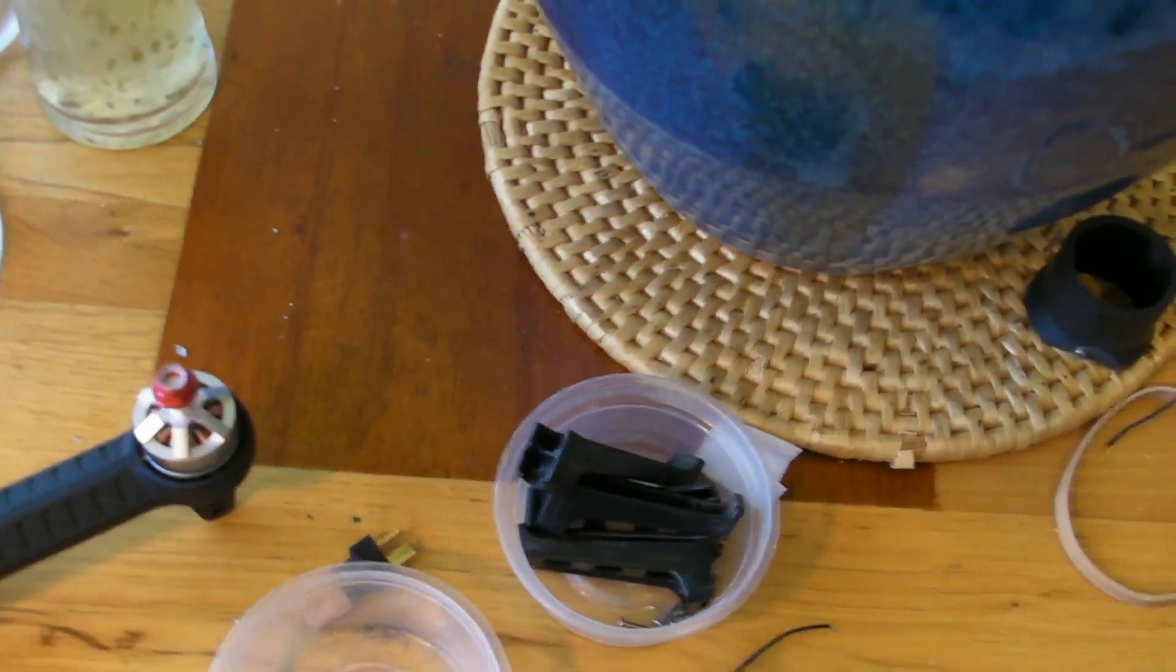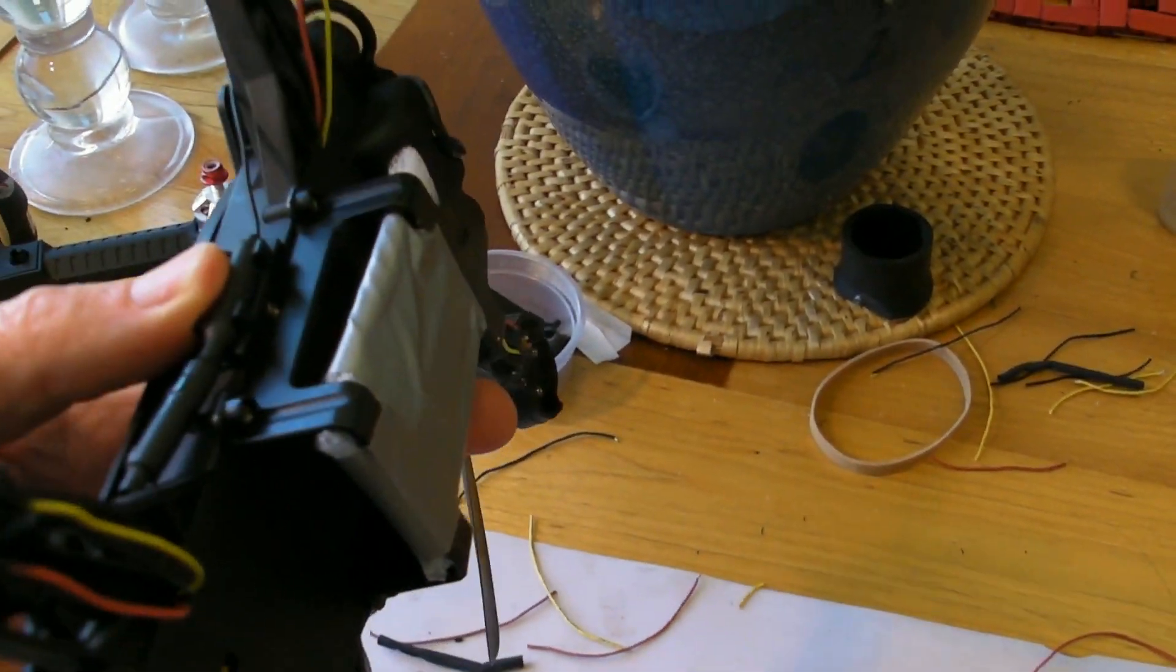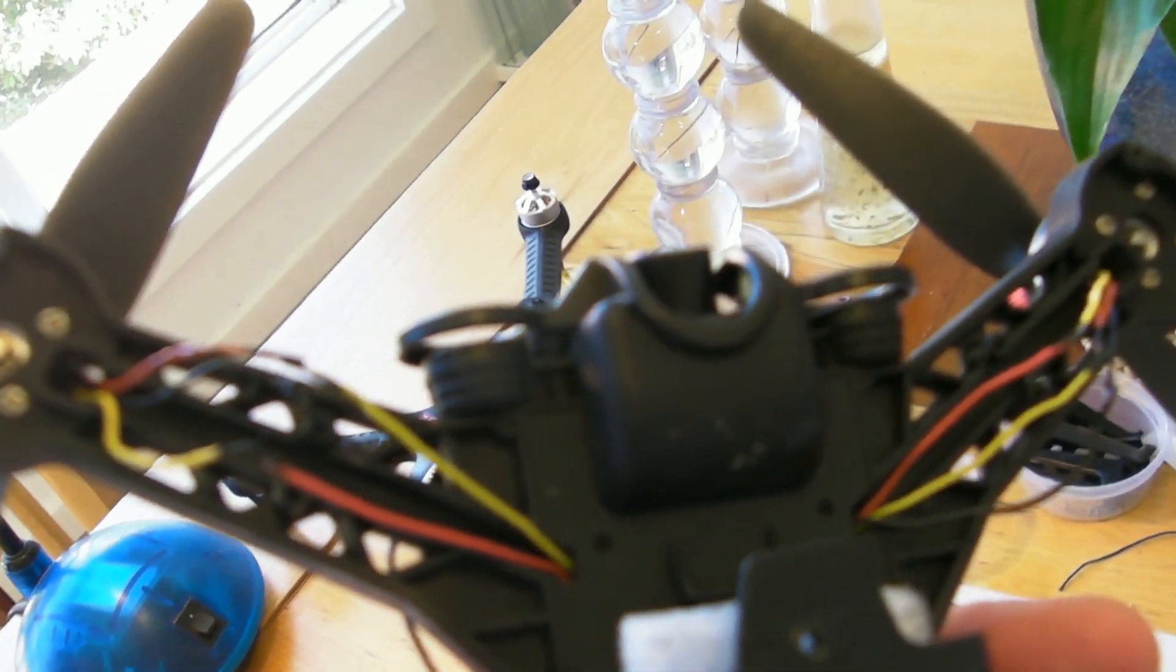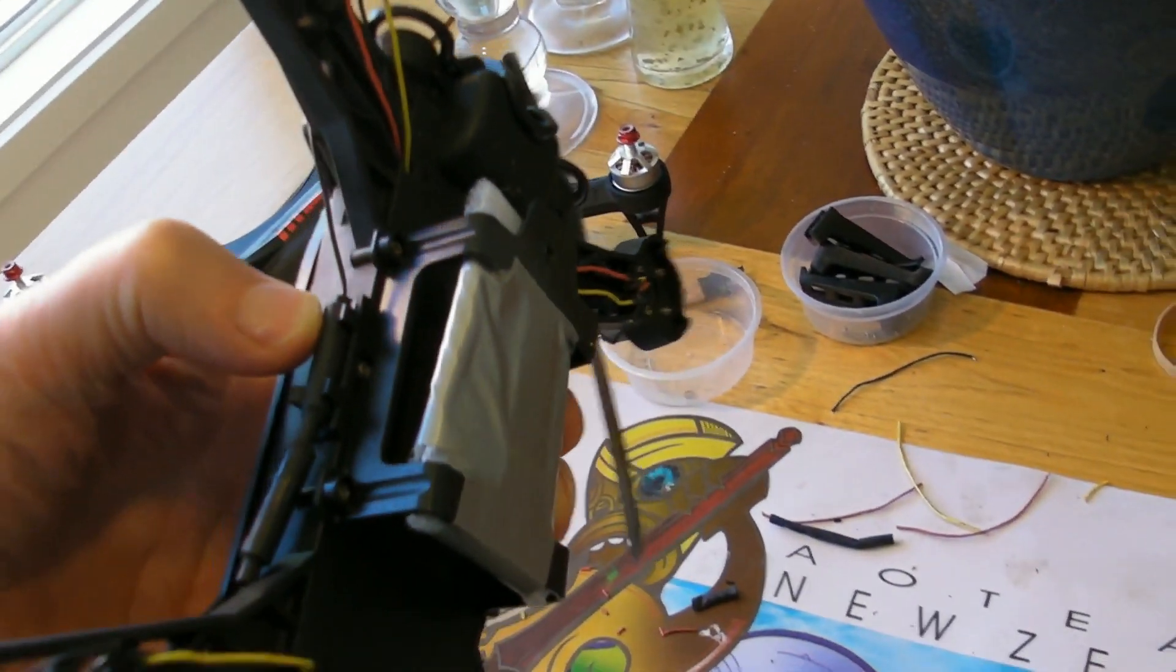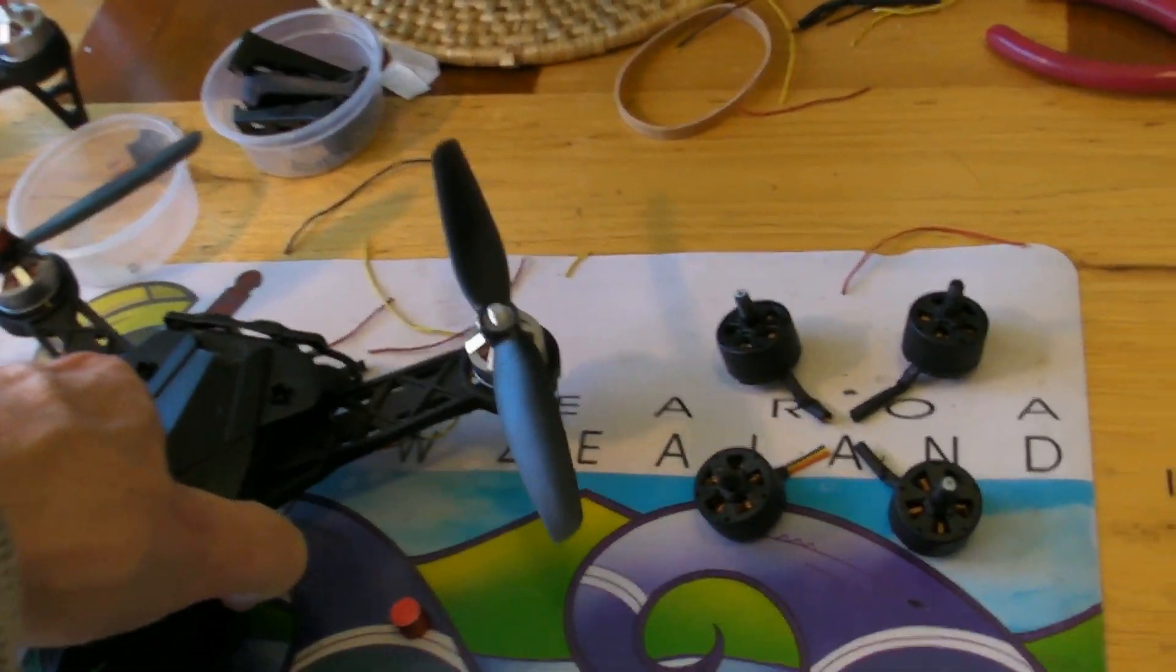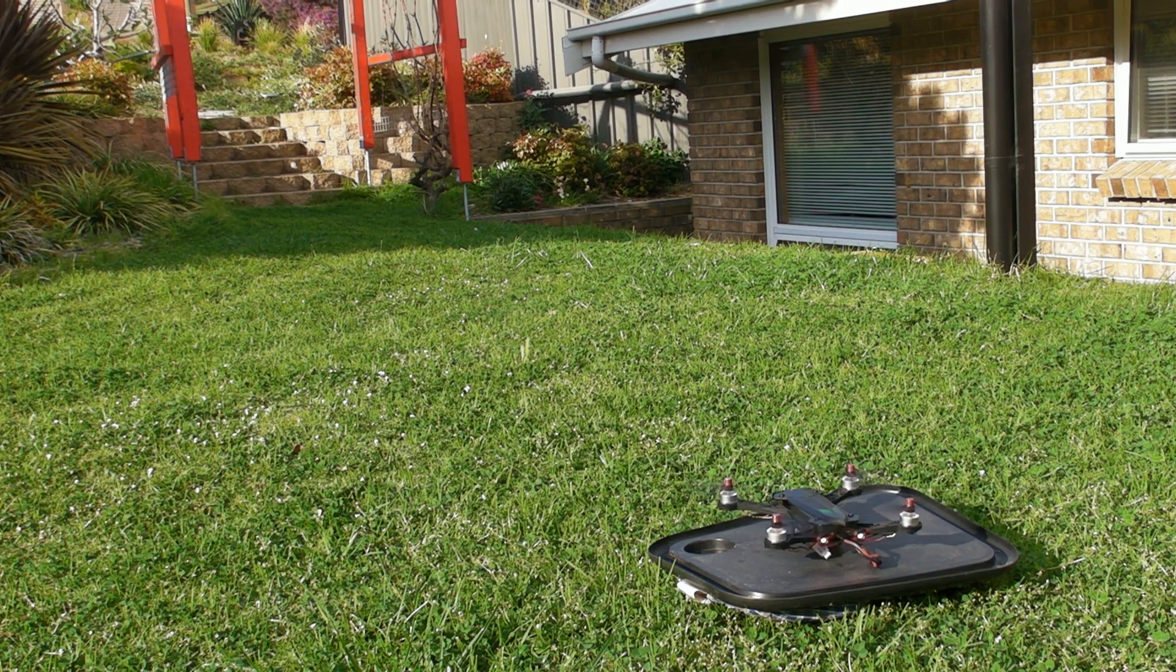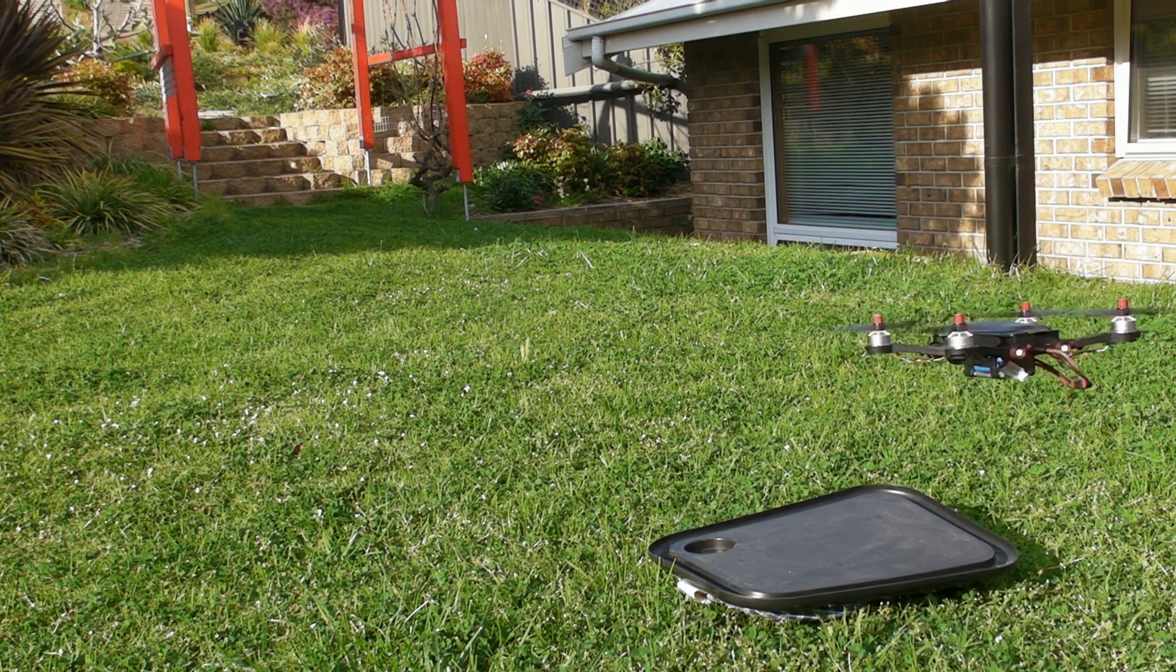Quite why it's like that, I don't know, but it's something worth pointing out to other people who want to do this. Because if at first you get the result I did, you might think you've done something wrong, but it's just MJX taking a slightly different approach between the Bugs 3 and the Bugs 6. So after sorting that out, I couldn't wait for the insulation to dry on the wires. Get up in the morning, and still in my dressing gown, I'm out the front lawn for a test fly.